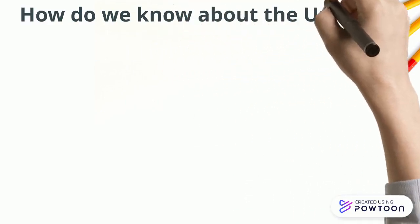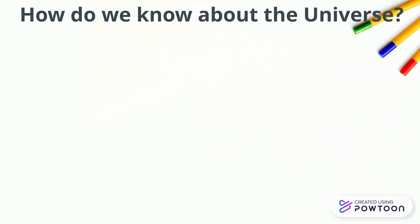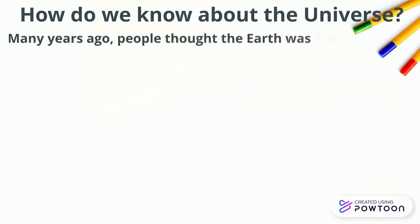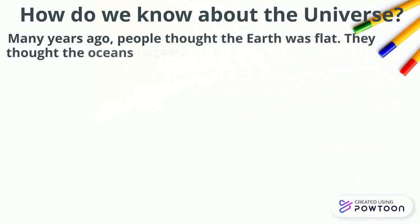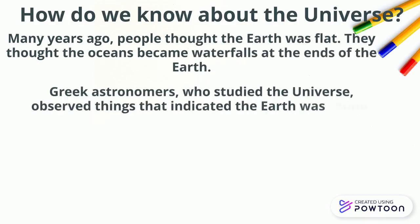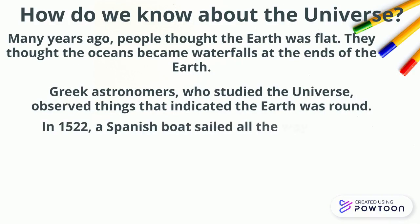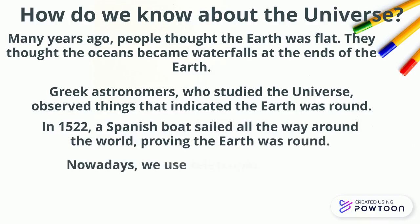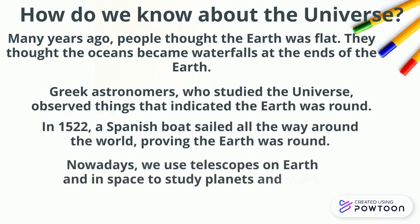But how do we know about the universe? Many years ago, people thought the Earth was flat. They thought the oceans became waterfalls at the ends of the Earth. Greek astronomers, who studied the universe, observed things that indicated that Earth was round. In 1522, a Spanish boat sailed all the way around the world, proving the Earth was round. Nowadays, we use telescopes on Earth and in space to study planets and stars.